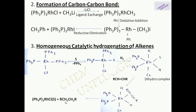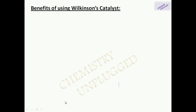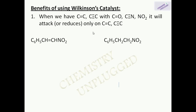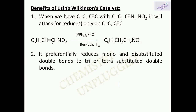Syn addition generally leads to the formation of cis compounds, so if you are using alkynes, cis alkene is preferentially formed. The benefits of using Wilkinson's catalyst: it is very stereoselective and stereospecific. When we have alkene, alkyne, C=O, C≡N, and NO₂ groups together, it can only attack C=C and C≡C bonds — it will not reduce C=O, C≡N, or NO₂ groups. For example, in such a reaction, Wilkinson's catalyst will reduce only the C=C bond.